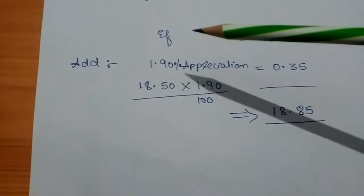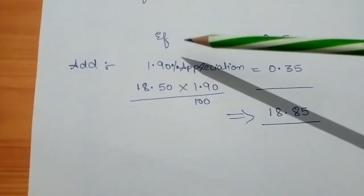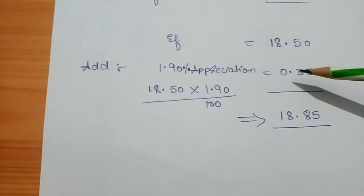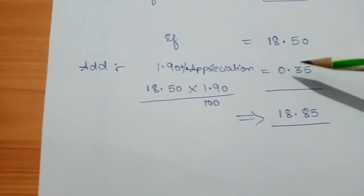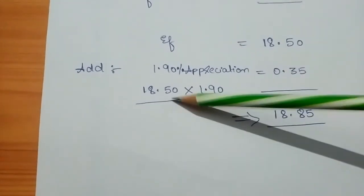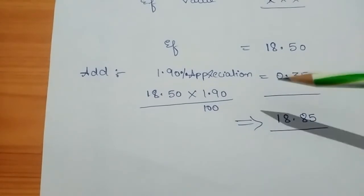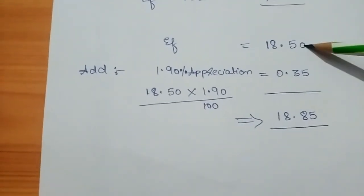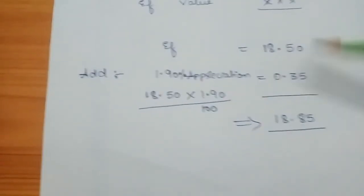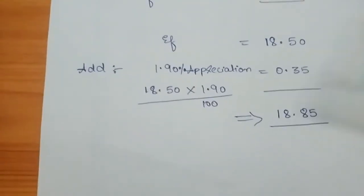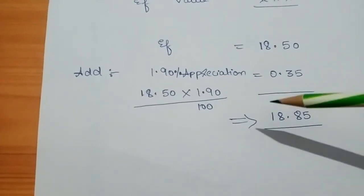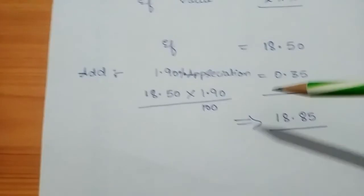Since the result is positive, we add the appreciation to the spot rate. The spot rate is 18.50 WON per Baht. 18.50 × 1.90 / 100 = 0.35. Adding this to the spot rate: 18.50 + 0.35 = 18.85. So the value of the Thai Baht has appreciated from 18.50 to 18.85 WON. This is how we calculate the future value of a foreign currency.